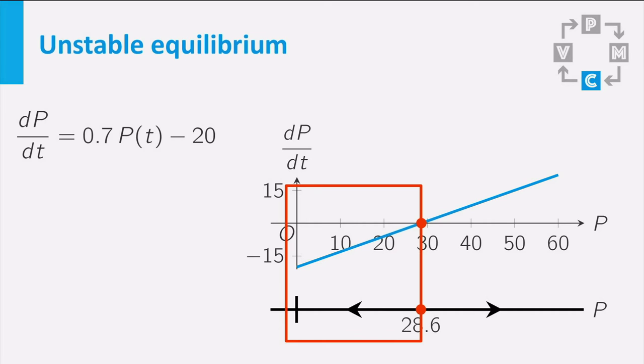The equilibrium solution of 28.6 is an unstable equilibrium, because some of the solutions that start near the equilibrium move away from the equilibrium value. In our case, that is even so for all solutions that start near the equilibrium.